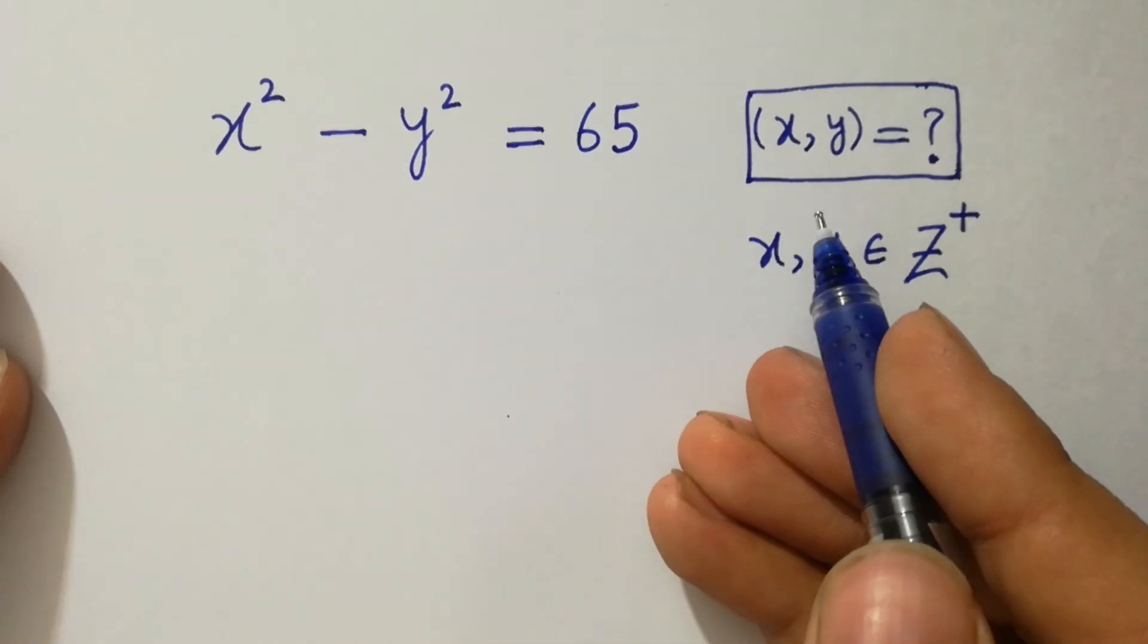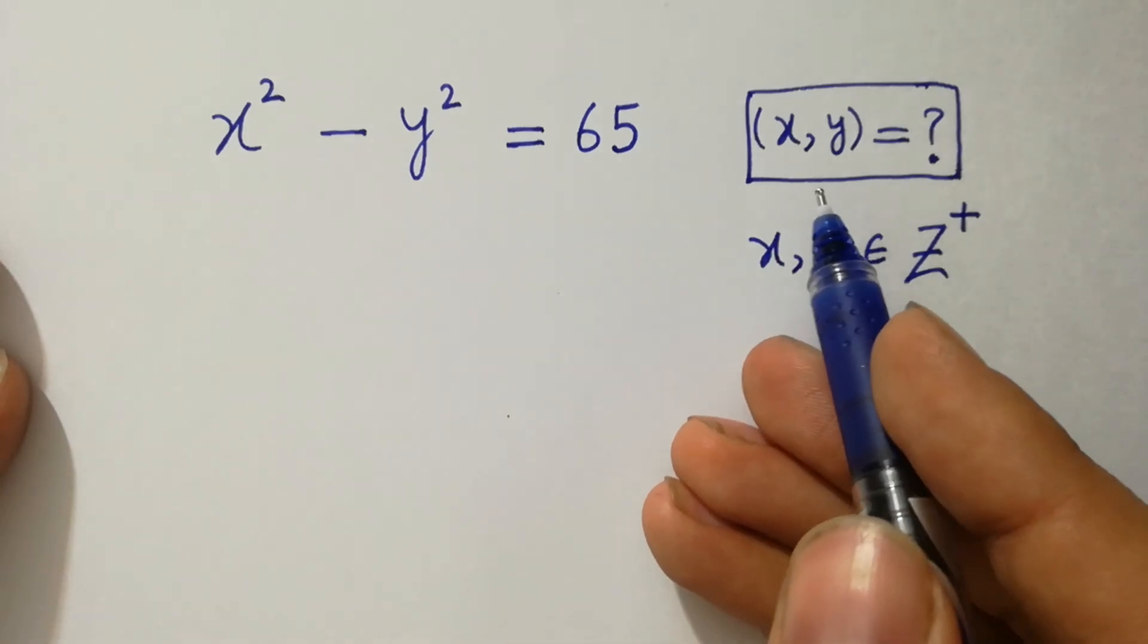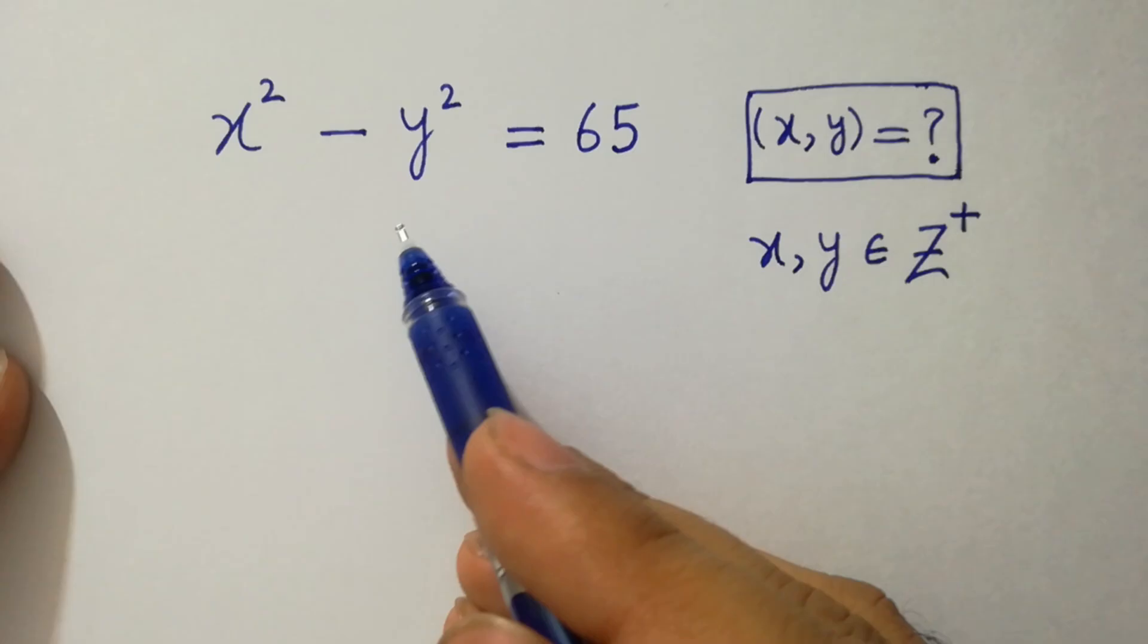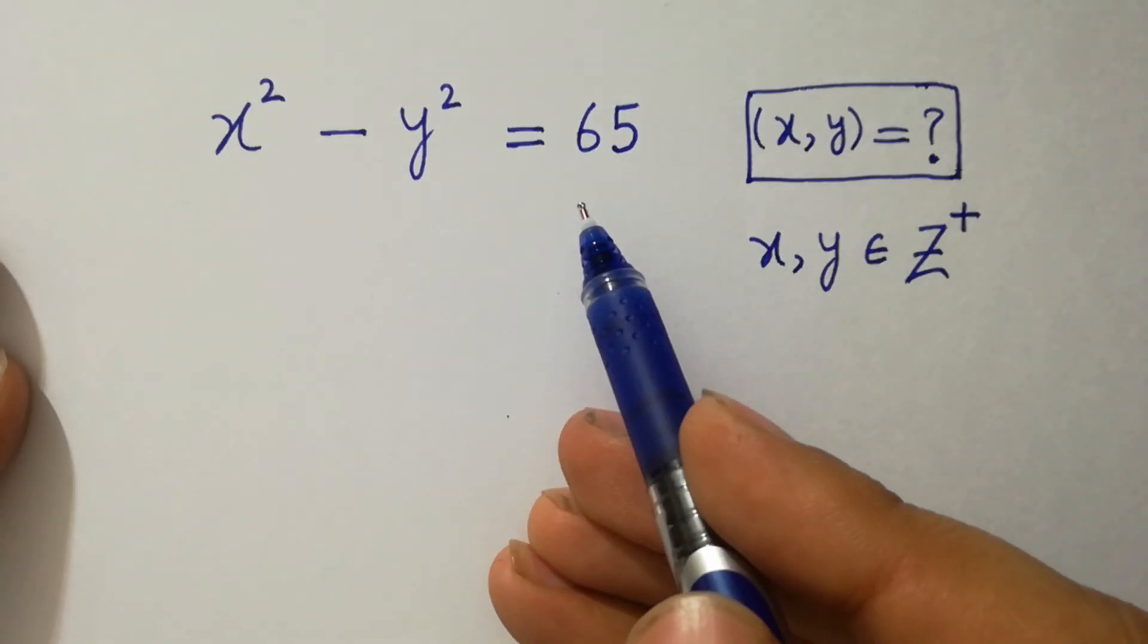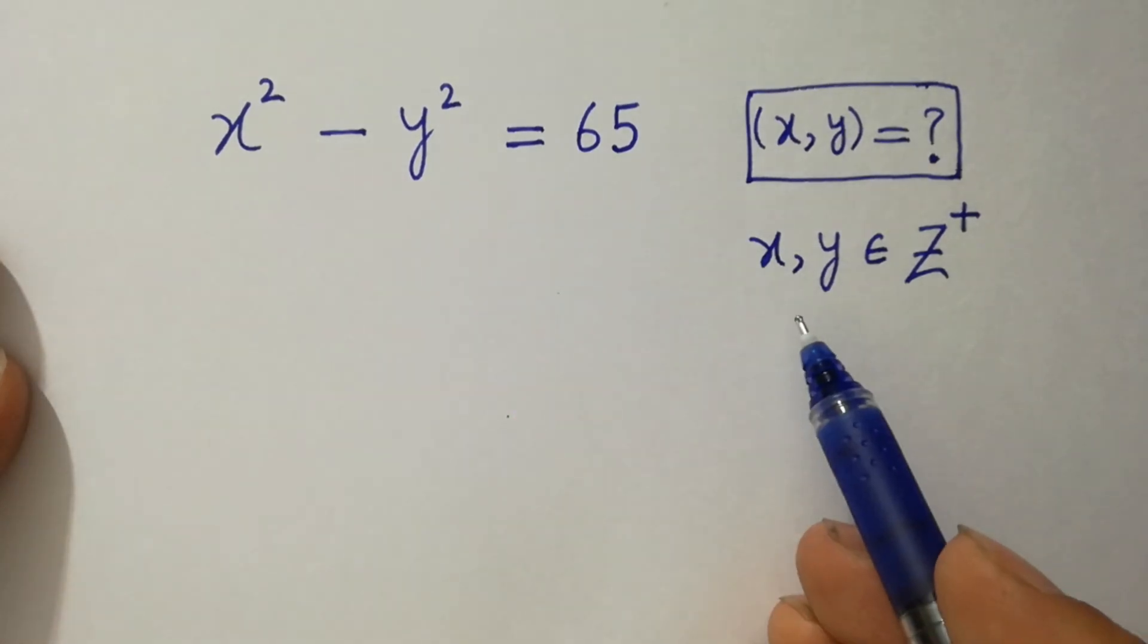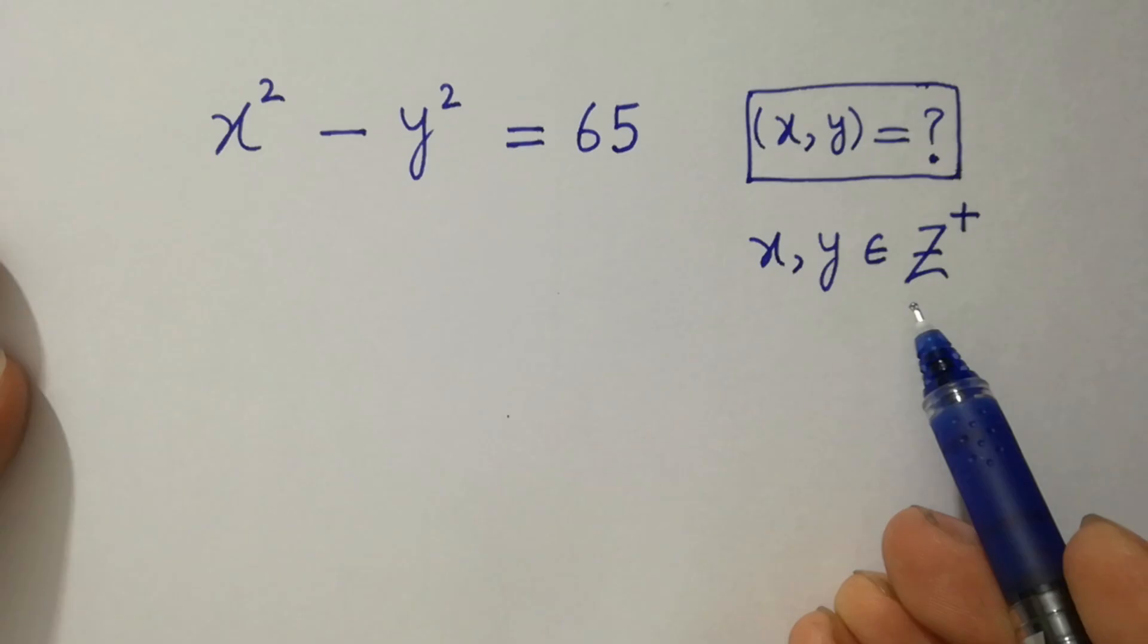Hello friends, find the value of x and y if x squared minus y squared equal to 65, where x, y belongs to positive integers.